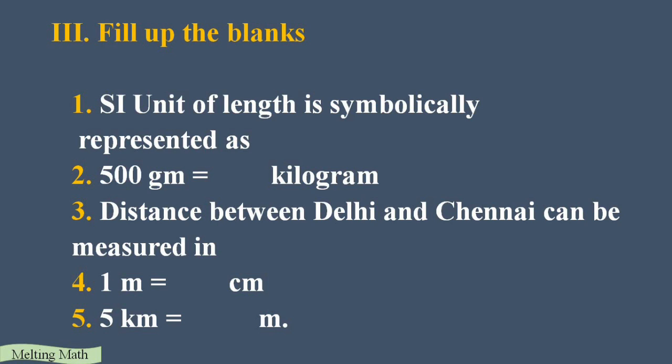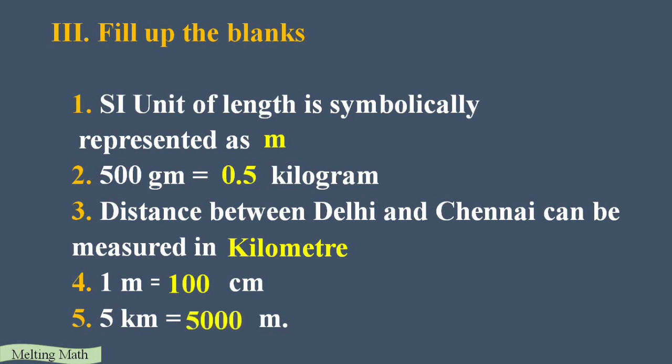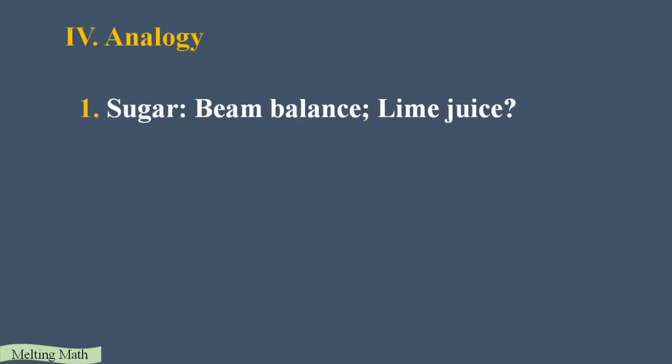Next, Fill in the Blanks. First: the SI unit of length symbolically represented as 'm' for meter. Second: 500 gram equals how many kilograms? One kilogram equals 1000 grams, so divide 500 by 1000 — we get 0.5 kilogram. Third: the distance between Delhi and Chennai is measured in kilometers. Fourth: one meter equals 100 centimeters. Fifth: five kilometers equals five thousand meters, since one kilometer equals 1000 meters.